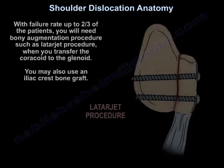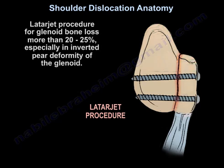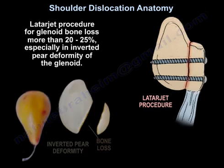With failure rate up to two-thirds of patients, you will need a bony augmentation procedure such as the Latarjet procedure, where you transfer the coracoid to the glenoid. You may also use an iliac crest bone graft. Latarjet is indicated for glenoid bone loss more than 20 to 25%, especially in inverted pear deformity of the glenoid.